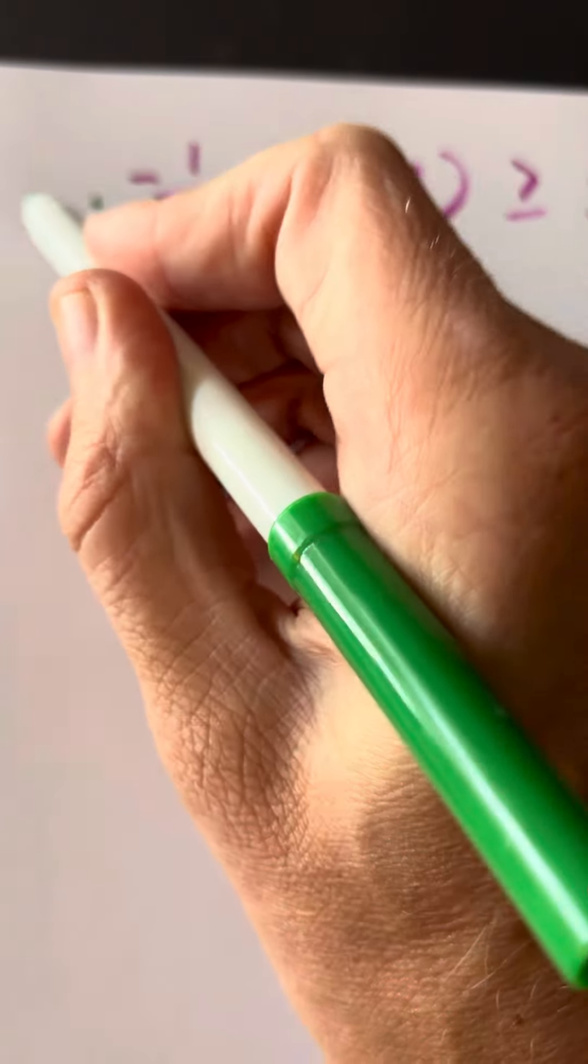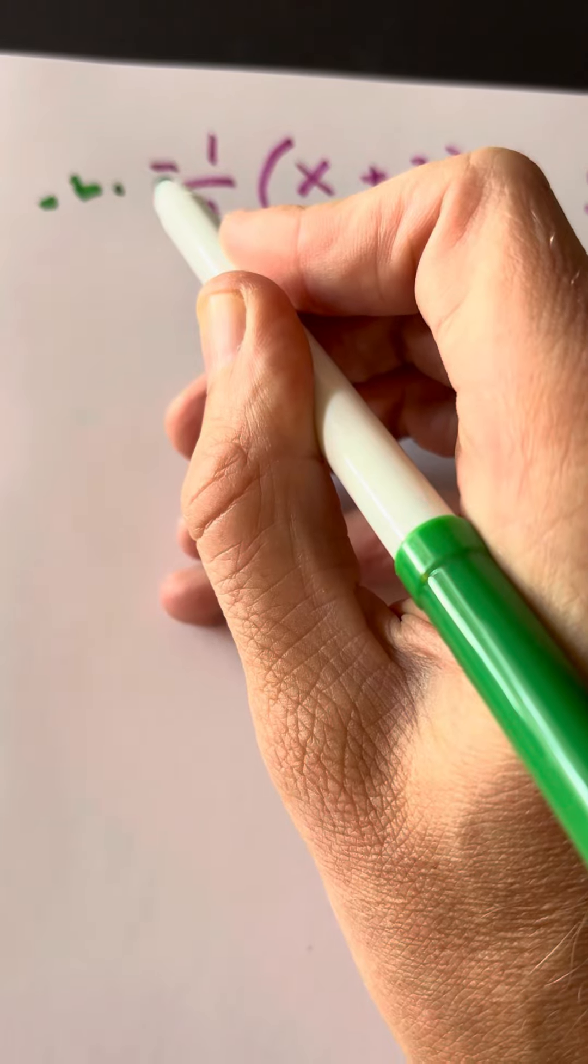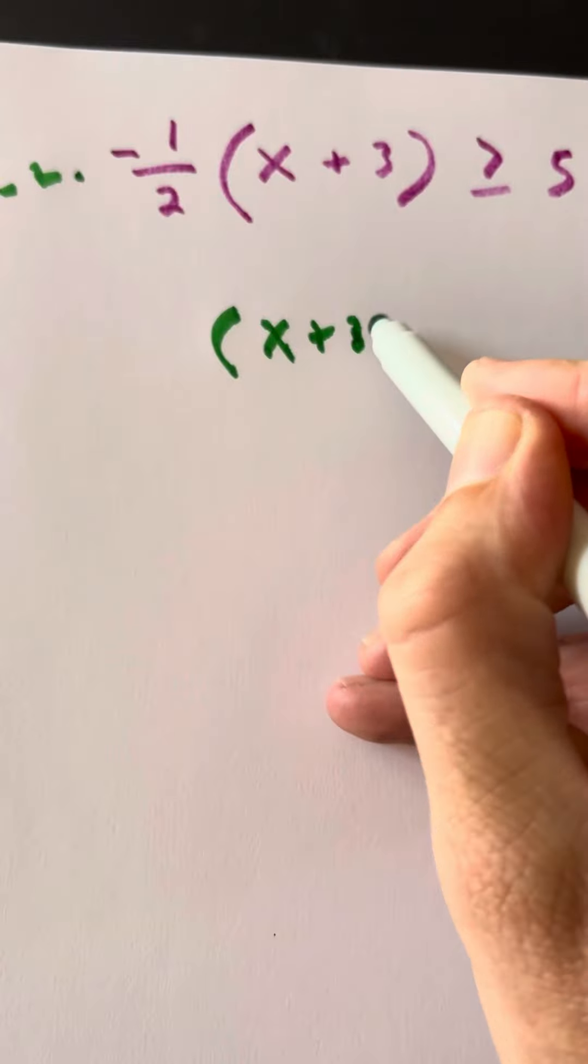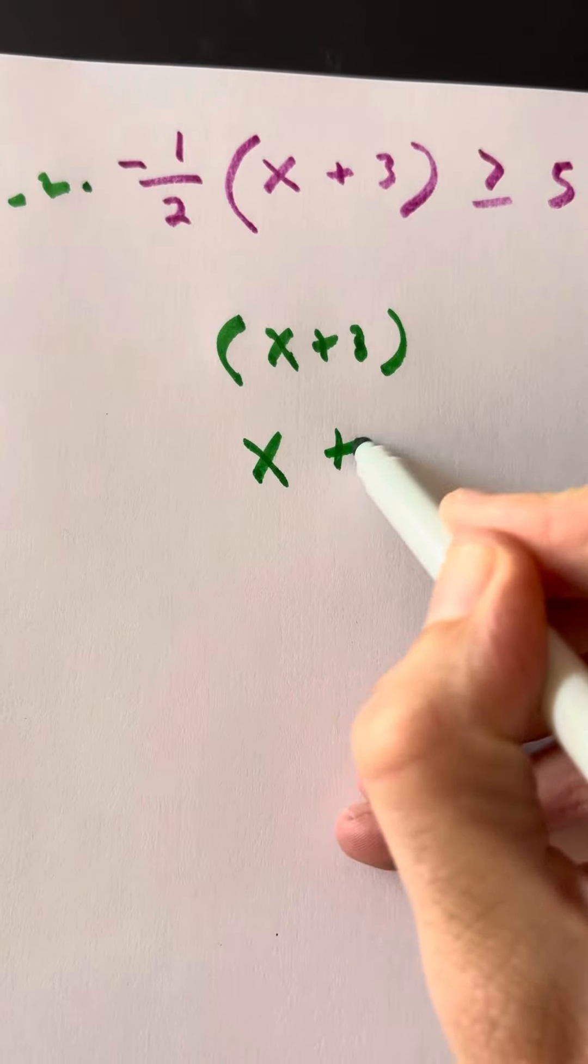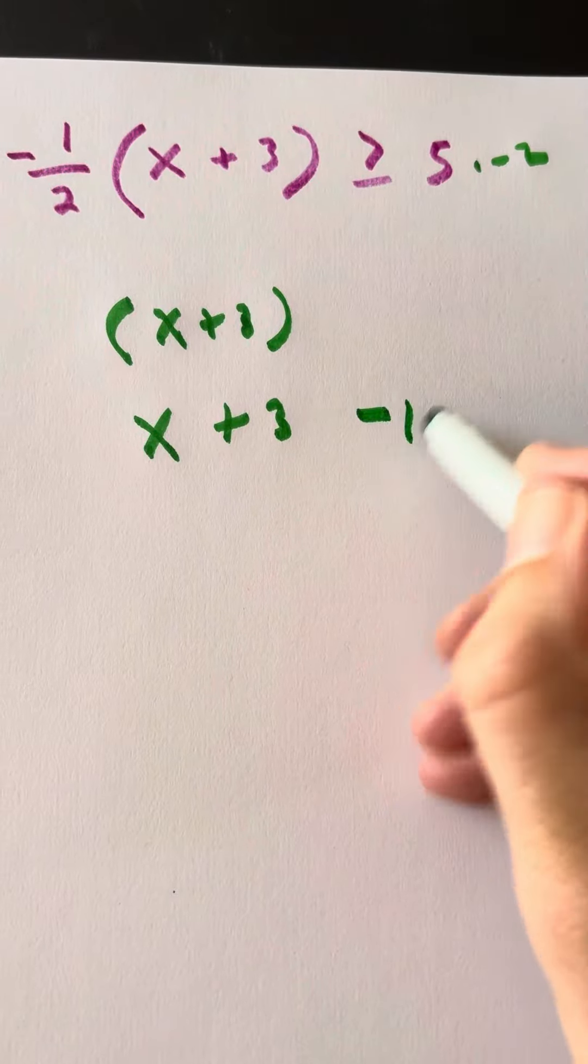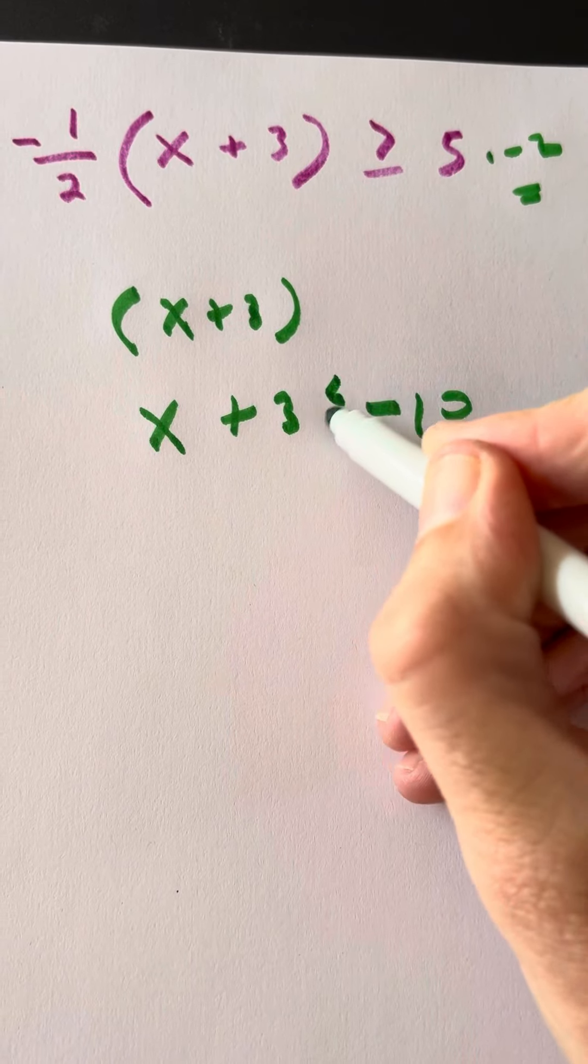So let's multiply both sides by negative 2. Because that'll get rid of the negative 1/2, and then this will clear. We'll just get x plus 3. Don't need the parentheses around that anymore. So we have x plus 3. 5 times negative 2 is negative 10. However, we did multiply both sides by a negative, so we do have to flip that symbol.